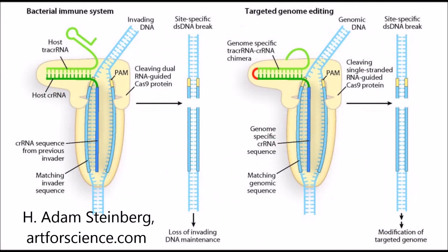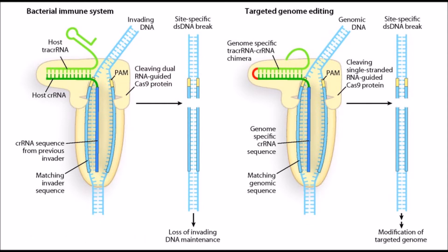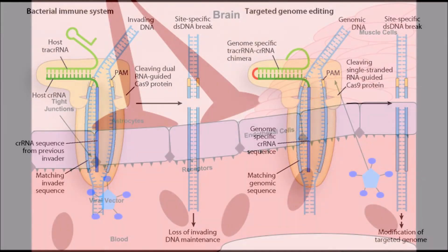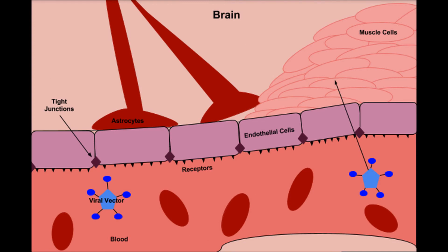In order to effectively cure Huntington's disease, we would need to edit the HTT gene directly. This could be achieved by utilizing the CRISPR-Cas9 technology, which uses gene therapy to deliver an endonuclease which can be manipulated to cut DNA. The main obstacle with this would be creating a proper viral vector which would both carry the necessary genomic CRISPR-Cas9 instructions and be able to pass the blood-brain barrier.